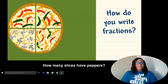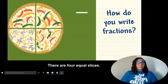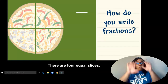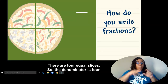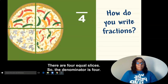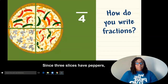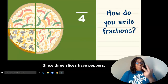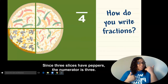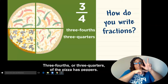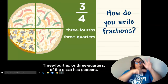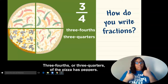How many slices have peppers? There are four equal slices. So the denominator is four. Since three slices have peppers, the numerator is three. Three-fourths, or three-quarters, of the pizza has peppers.